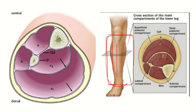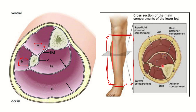In the first picture we can see the anterior compartment, the lateral compartment, and two posterior compartments. These two posterior compartments are separated into the superficial posterior and the deep posterior compartment. In the second picture, we can see the anterior compartment, the lateral compartment, the superficial posterior compartment, and the deep posterior compartment.